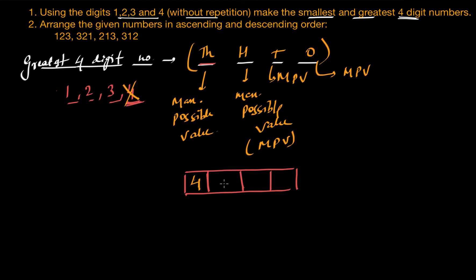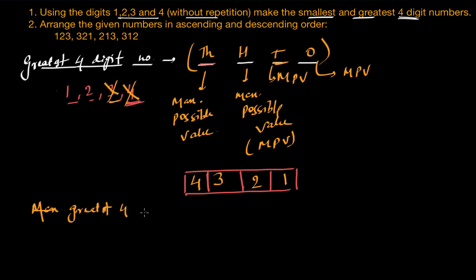So we put 4 in the 1000s place, then 3 in the 100s place. Now in the 10s place, from the remaining digits 1 or 2, the maximum possible value is 2, so we put 2 there, and 1 is left for the 1s place. So the greatest 4-digit number is 4,321.